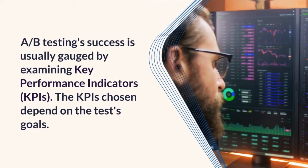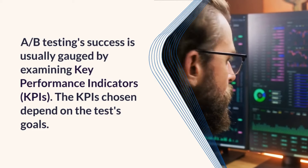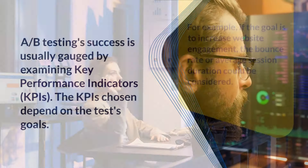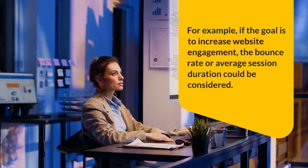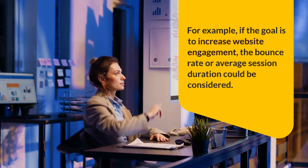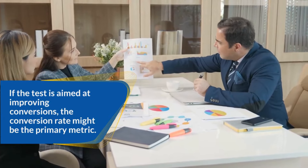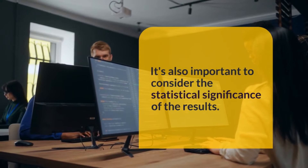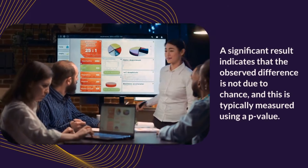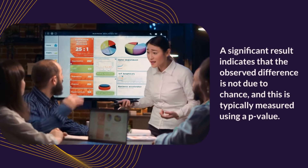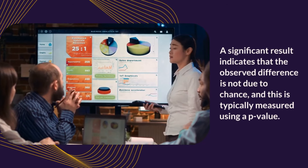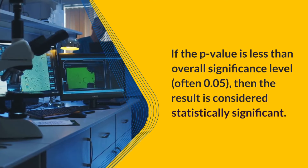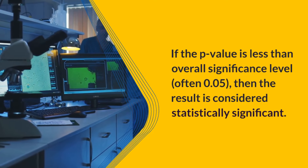A/B testing success is usually gauged by examining key performance indicators, or KPIs. The KPIs chosen depend on the test's goals. For example, if the goal is to increase website engagement, the bounce rate or average session duration could be considered. If the test is aimed at improving conversions, the conversion rate might be the primary metric. It's also important to consider the statistical significance of the results. A significant result indicates that the observed difference is not due to chance, and this is typically measured using a p-value. If the p-value is less than the overall significance level, often 0.05, then the result is considered statistically significant.